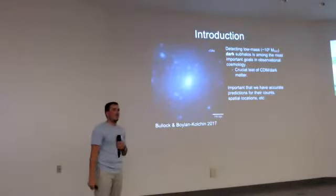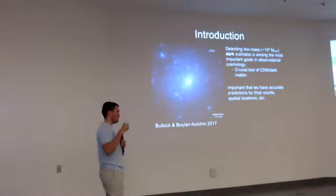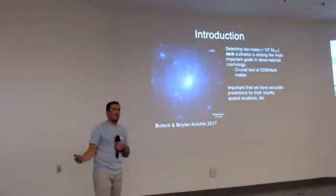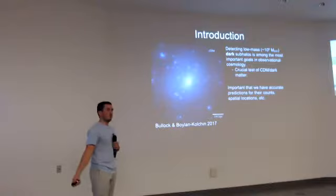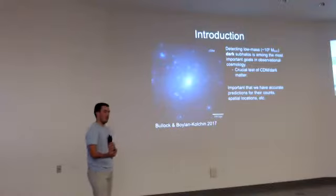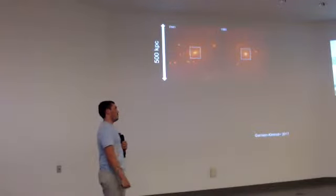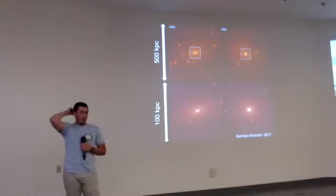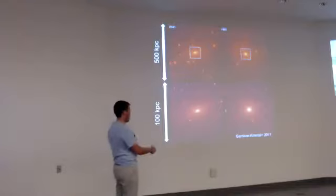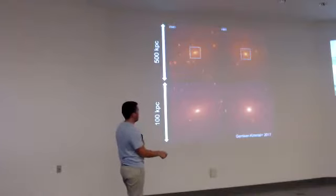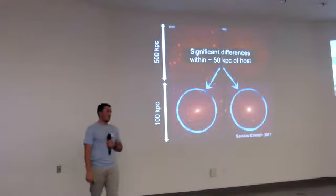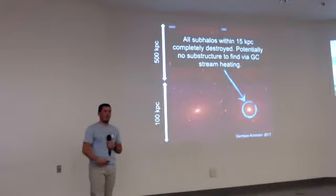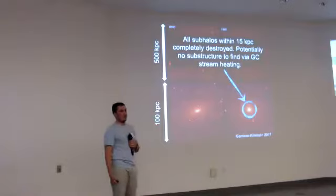Just a little introduction: detecting small or low-mass dark matter halos is an important test for the Lambda CDM model. In order to carry out this test, it's important to have accurate predictions for not only the counts, but also the spatial distribution of where these halos are going to be located. With the relatively new addition of hydrodynamic simulations, we've been discovering that we can't really do this with dark matter-only simulations. If you look at the inner regions of a dark matter-only simulation compared to its equivalent hydrodynamic simulation, you see significant differences in sub-halo counts. That gets even worse if you look at just the inner 15 kiloparsecs, where there is practically nothing to be detected through techniques such as stream heating.